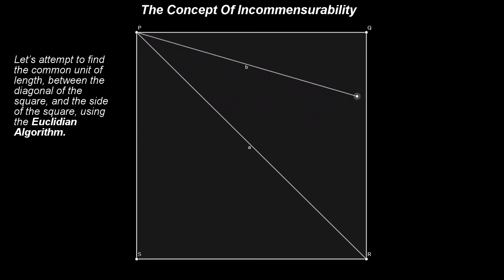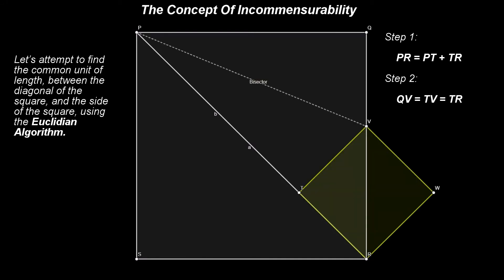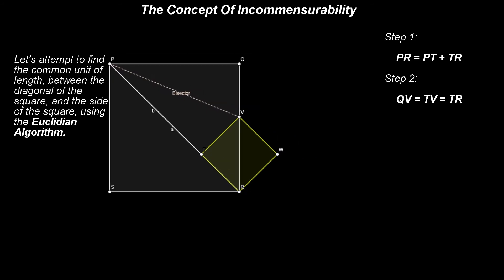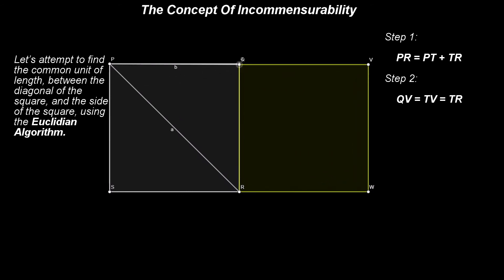We start this process by overlapping a segment with the length equal with the side of the square over the diagonal of the square. From this construction we have: the diagonal PR is equal with the length PT plus the remainder TR. Now we have to compare the length of the side QR with the remainder TR. If PV is the bisector of angle QPT, then QV is equal with TV. Also, triangle RTV is isosceles, so TR is equal with TV. In conclusion, the following three segments are all equal with each other: RT, TV, and QV. RTVW is a square with the side equal with the remainder found in the first step. We can see how the size of the square RTVW changes when PT rotates around the point P. When PQ and PT overlap, the two squares PQRS and RTVW are equal.